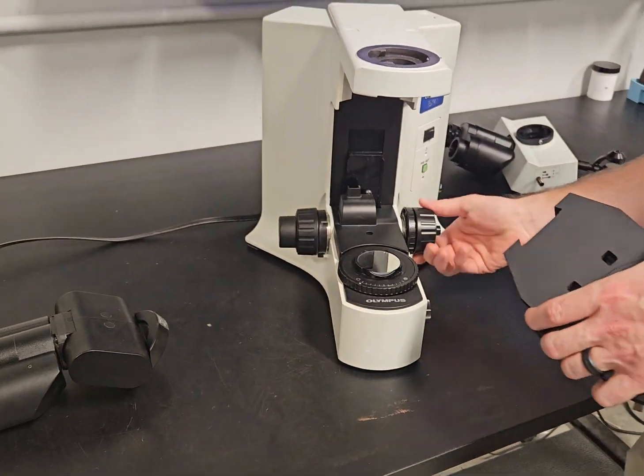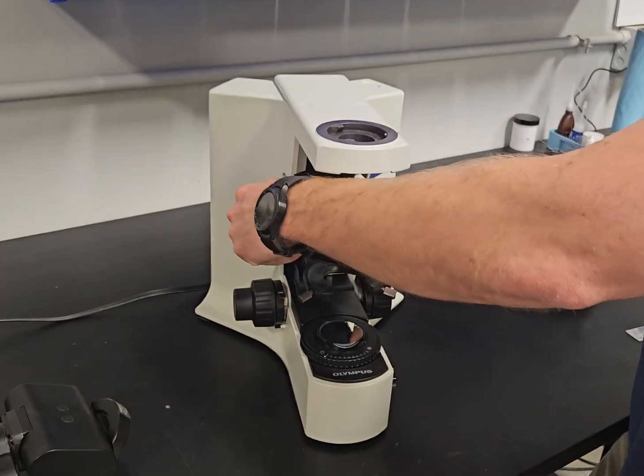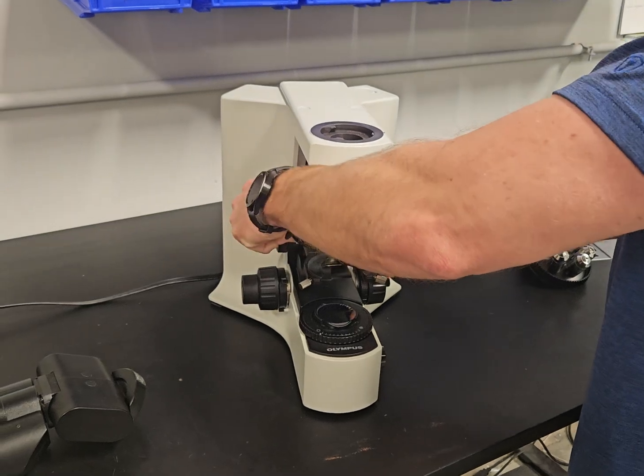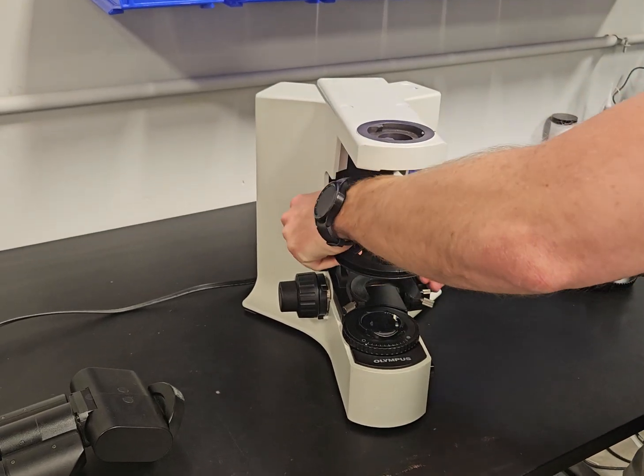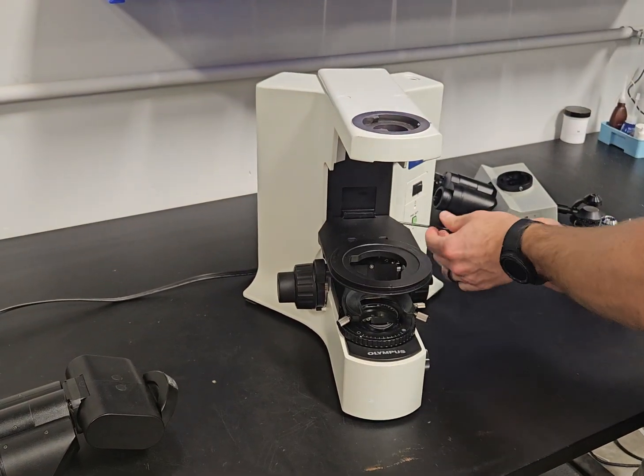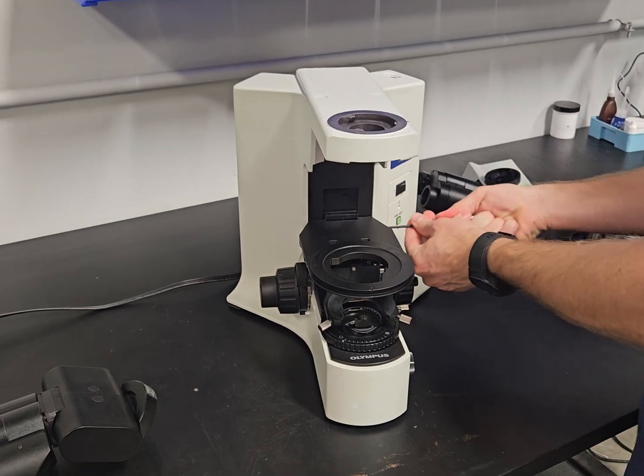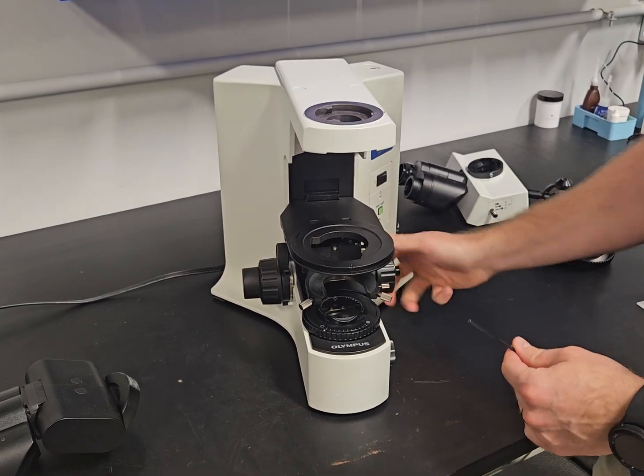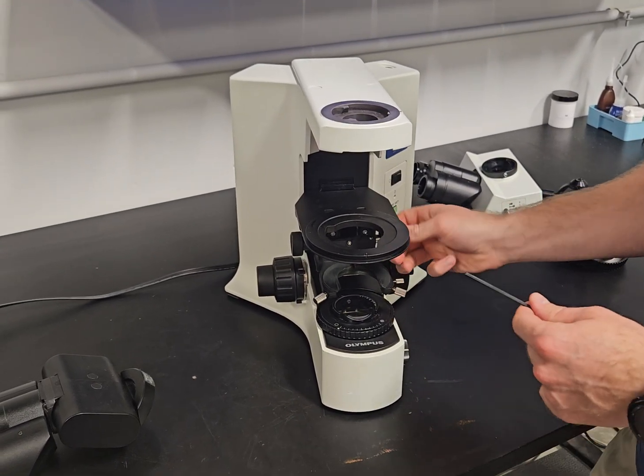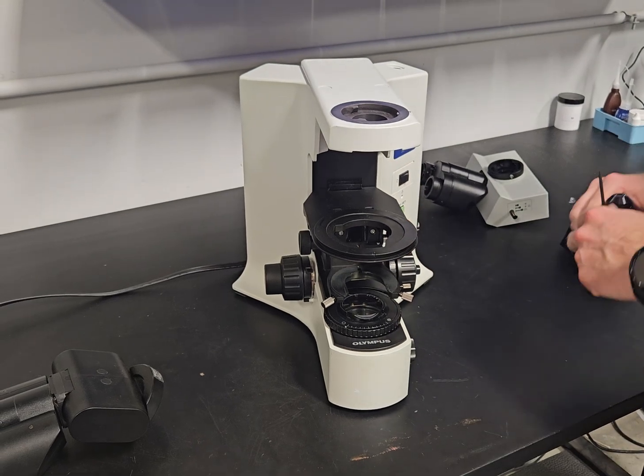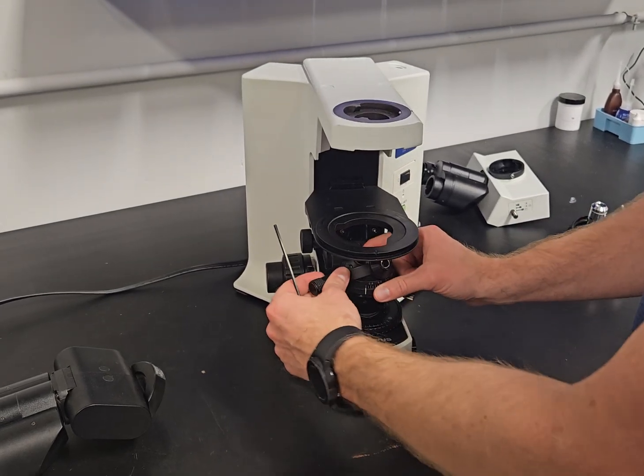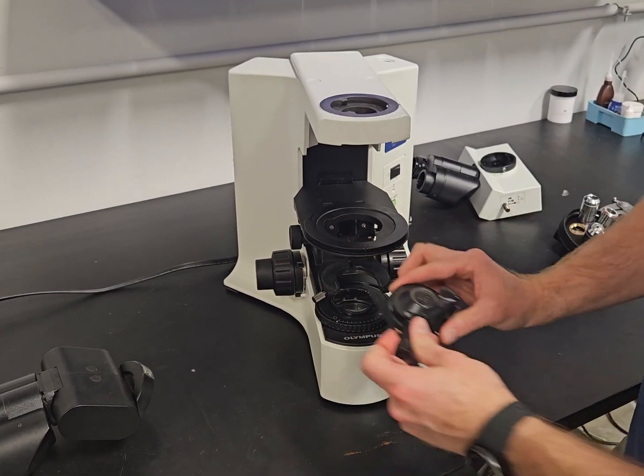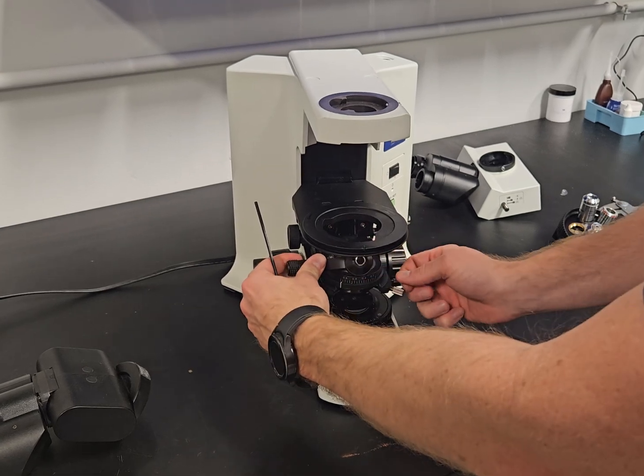We're going to put this thing back together and start off with the sub-stage. These scopes are awesome. This tool basically does everything that you want to do on the scope. You got a little stage pin right there that we're going to put in and rotate. You're going to see it click back.